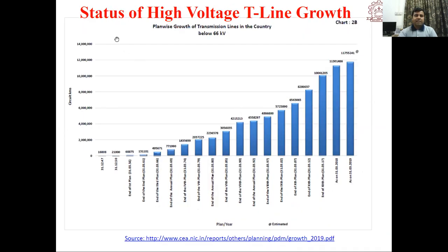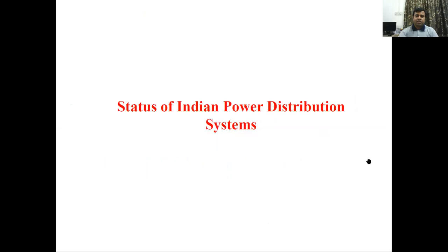For high voltage lines below 66 kV, the circuit km grew from 16,808 at independence to 11,755,241 circuit km by 31st March 2019. This concludes the overview of India's generation status and transmission status.